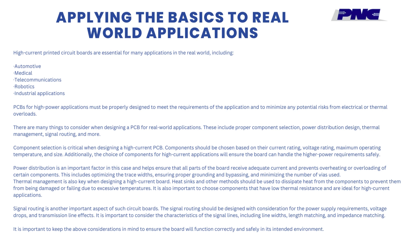Component selection is critical when designing a high-current PCB. Components should be chosen based on their current rating, voltage rating, maximum operating temperature, and size. The choice of components for high-current applications will ensure the board can handle the higher power requirements safely. Power distribution is an important factor and helps ensure that all parts of the board receive adequate current, preventing overheating or overloading of certain components. This includes optimizing trace widths, ensuring proper grounding and bypassing, and minimizing the number of vias used.